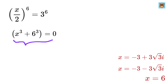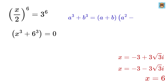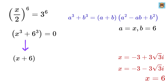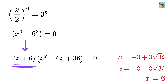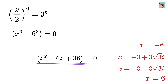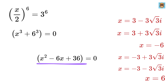Next, we solve x cubed plus 6 cubed equals 0 using the sum of cubes formula: a cubed plus b cubed equals a plus b, multiplied by a squared minus ab plus b squared. Setting a as x and b as 6, we get x plus 6, multiplied by x squared minus 6x plus 36, equals 0. The first term gives x equals minus 6. Solving the quadratic gives the remaining roots as 3 plus 3√3·i and 3 minus 3√3·i.